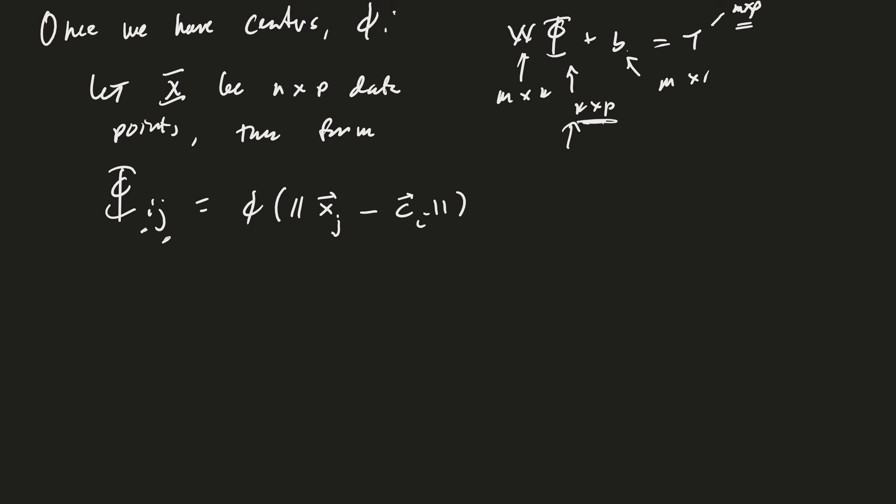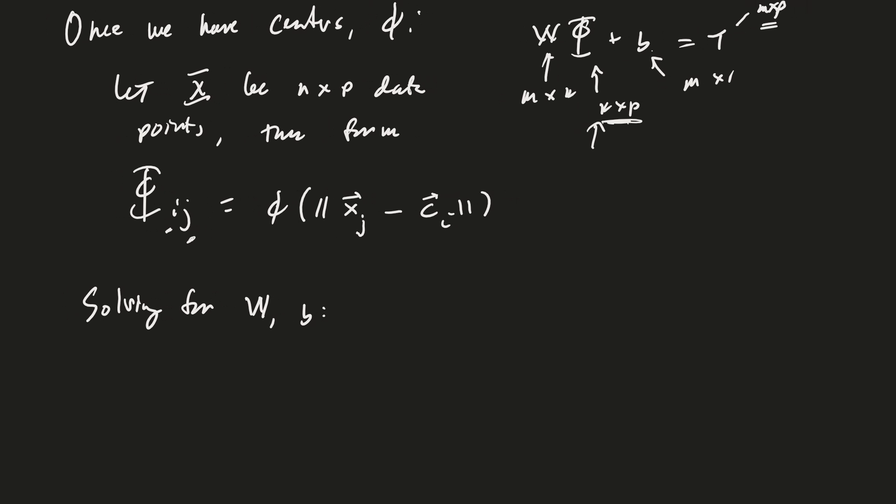Targets T will be m by p. So we typically will want to get rid of the b, right? So solving for W and b... Again, W is m by k, b is m by one. Do you remember how to change this problem into a linear problem? That's right, we take W hat to be W and then b is our last column.